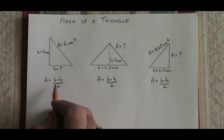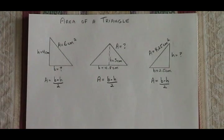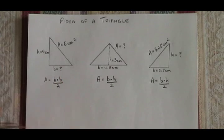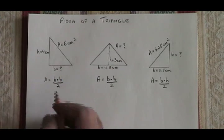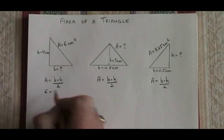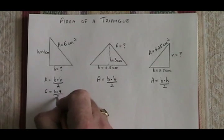In this triangle, the height is 4 centimeters and the area is 6 centimeters squared. What is the length of the base? We fill in the formula. 6 equals B times 4 over 2.